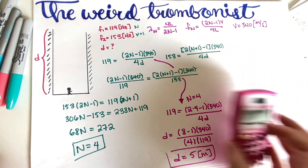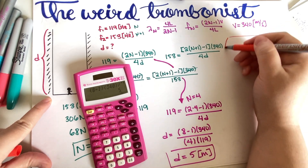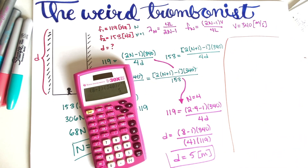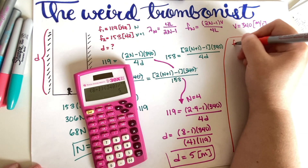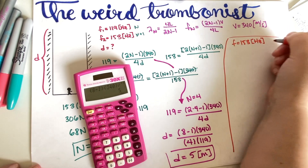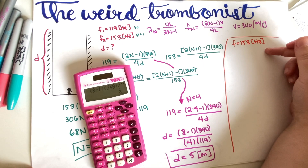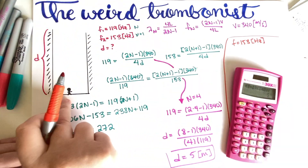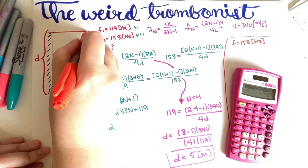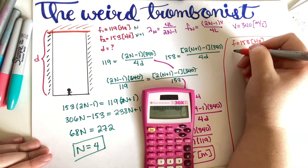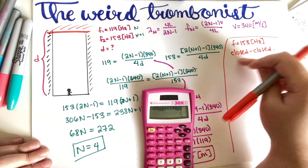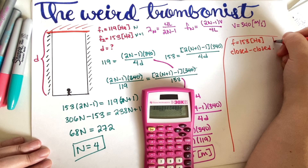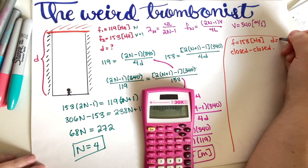Now let's look at part B. The trombonist is playing at 153 Hz when her neighbors, annoyed by the noise, place a large board across the mouth of the well. With the board in place, will the note still excite a standing wave? Now we had a closed-open system, but the neighbors have essentially closed the top too, giving us a closed-closed system. The frequency is still 153 Hz and the depth is still 5 meters.